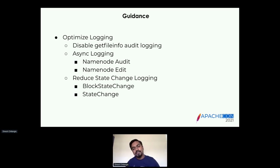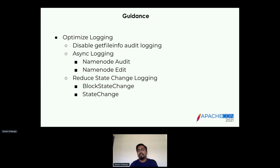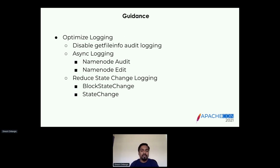Then comes the state change logs. There are two special kinds of logs dumped into your NameNode: the state change and the block state change. Every time a file or block state changes, by default it is at info level — so if you wrote a block, there's a log for that; if Hive is trying to delete a temporary file, there's a log for that. You can tone down that logging from info to warn, or even to error, since that is the only time you would need those logs. That will reduce a lot of logging.